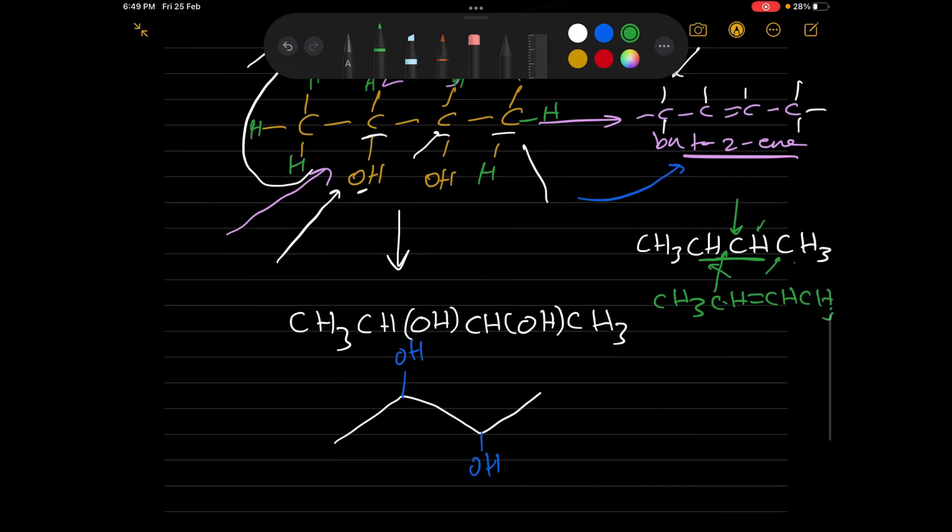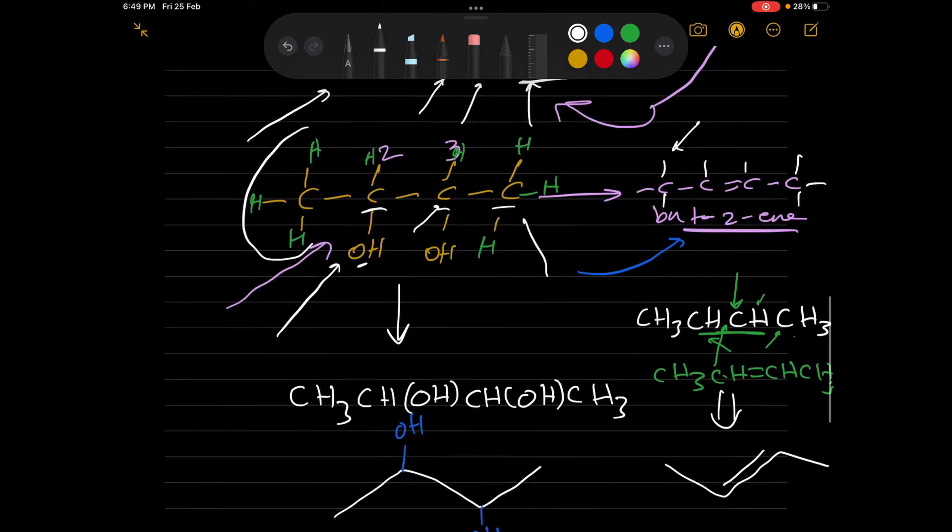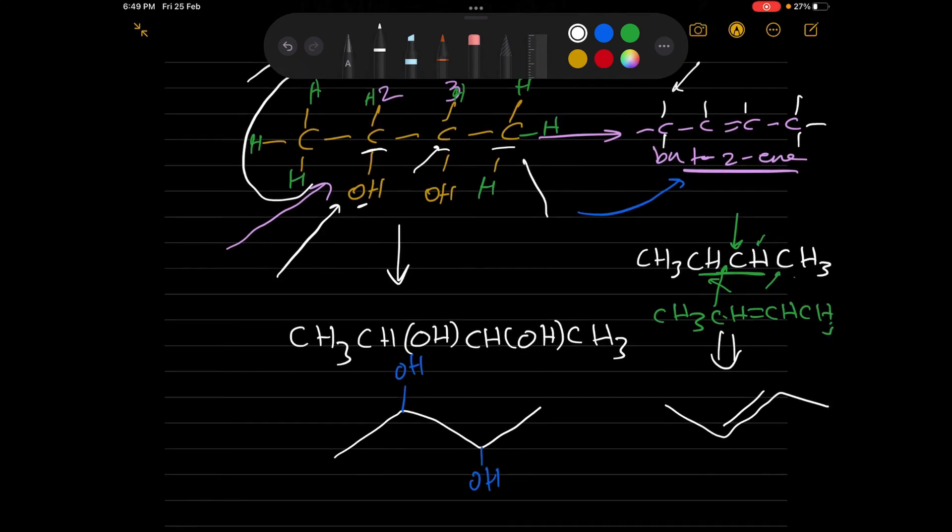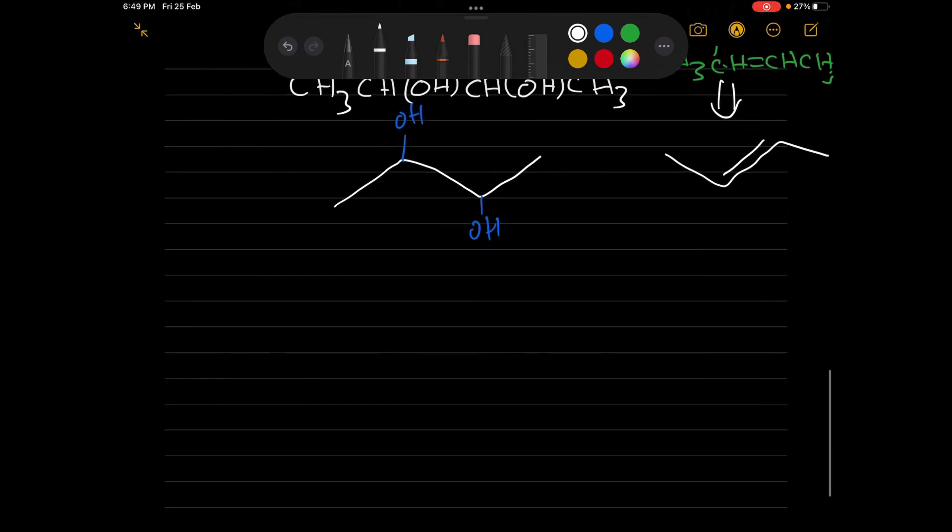And finally, if you want to draw it in terms of a skeletal formula, you have four carbons. You draw one, two, three, and you have the double bond, which is between the second and the third carbon. So this is all what you need about the oxidation of this process. We'll see you next time.